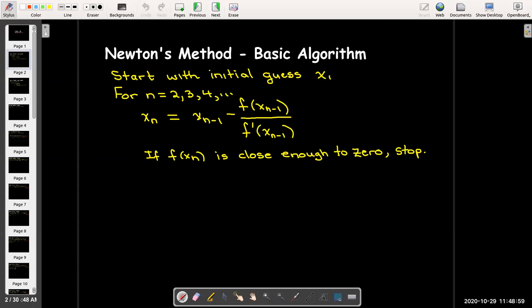We're given an initial guess or initial approximation x sub 1, and then after that, for n equals 2, 3, 4, we find our next approximation by taking our previous approximation and subtracting the ratio of the function evaluated at the previous approximation divided by the derivative evaluated at the previous approximation. And we check to see if our new approximation is very close to 0, in which case we'll stop.